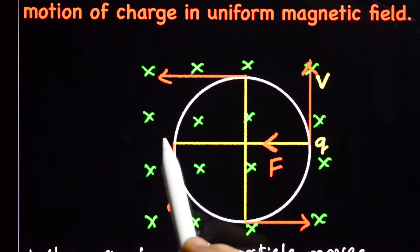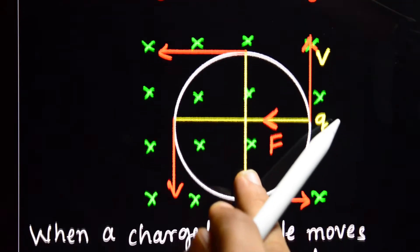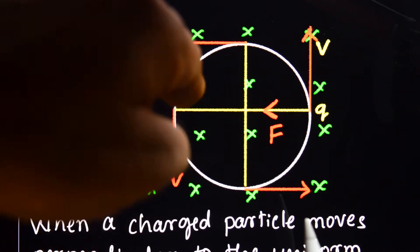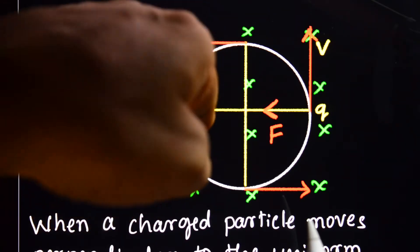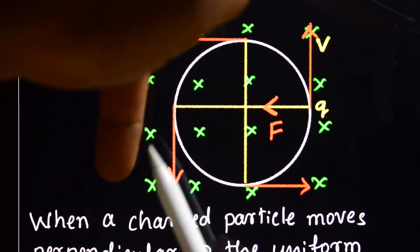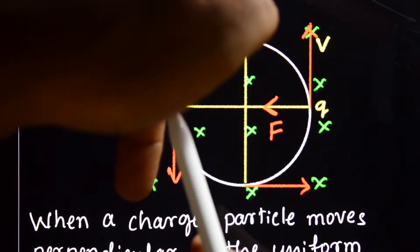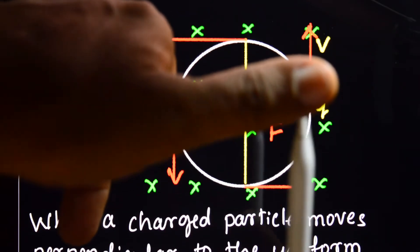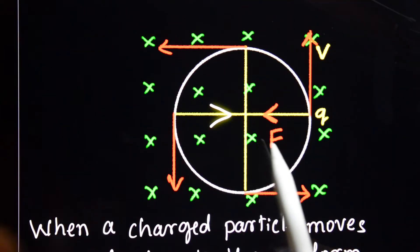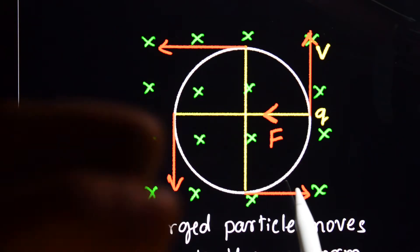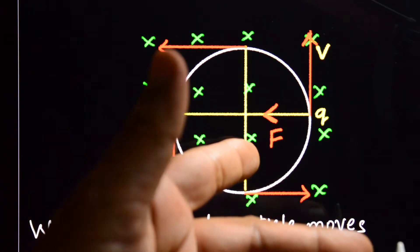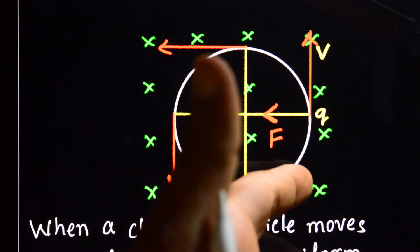Suppose the charged particle is here. The magnetic field is directed into the board or into the paper. The middle finger shows the direction of motion of the charged particle, and the thumb shows the direction of force experienced by the charged particle — which is towards the center. The force experienced by the charged particle is directed towards the center.